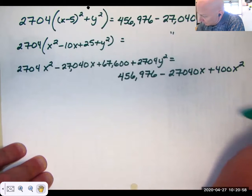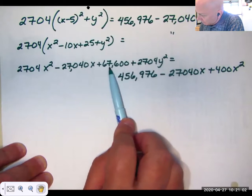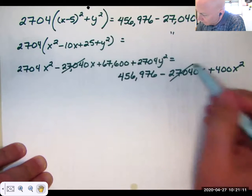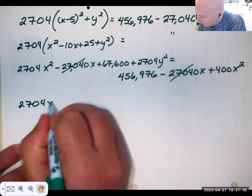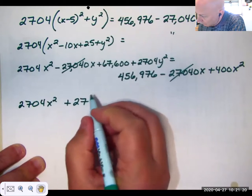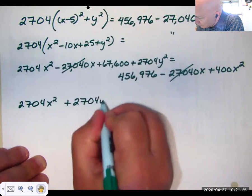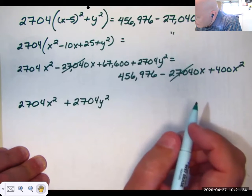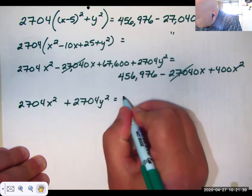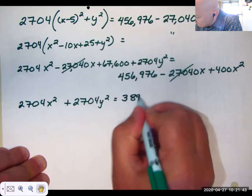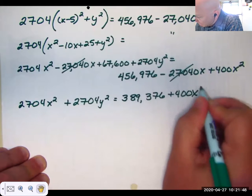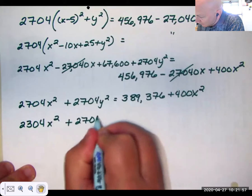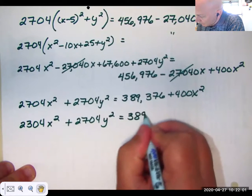Now, what cancels? Well, I've got a positive 67,600 over here. I can subtract that from here. Now, let's cancel these first. And I'm going to be left with... Now, I'm going to bring this 67,000 over to the other side. Now, I can subtract that 400x squared.